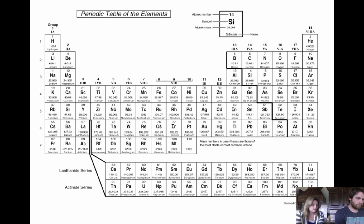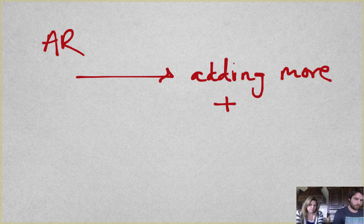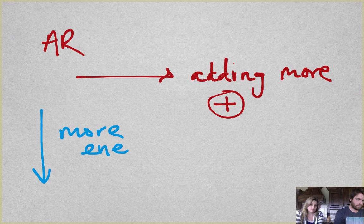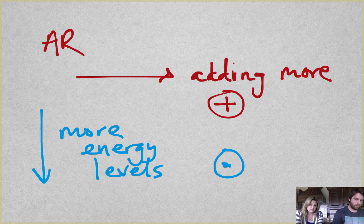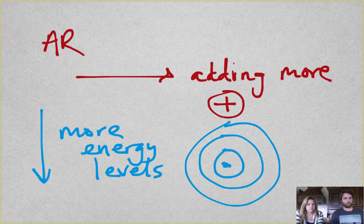As you move down, you're adding energy levels. Energy levels are further away from the nucleus, so your atomic radius is larger. So as we move across, you're adding more protons, becoming more positively charged, your radius is getting smaller. As you're moving down, you're adding more energy levels. The energy levels thing is actually pretty easy to see: you got nucleus, then you got one energy level, two energy levels. So it makes the radius even bigger.